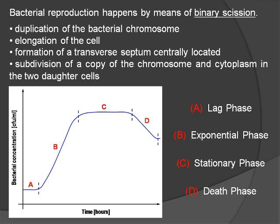During the exponential phase, bacteria duplication happens. Each bacterial cell divides into two different daughter cells, and the time interval between two duplication processes is known as mean generation time. During the exponential phase, bacteria consume the nutrients present in the growth medium and produce waste compounds due to their metabolism.